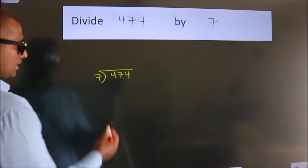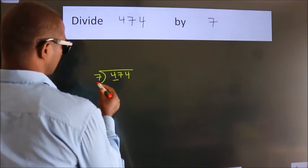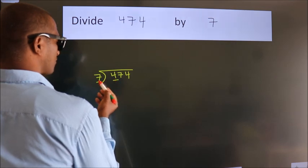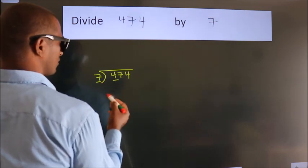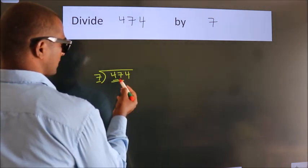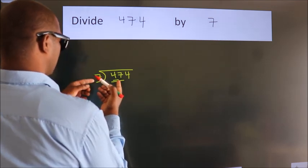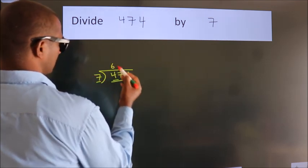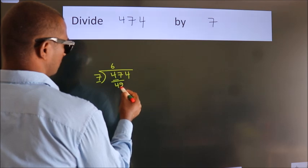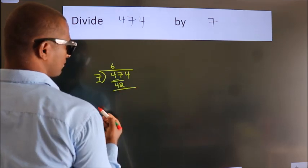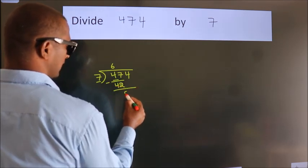Next, here we have 4, here 7. 4 is smaller than 7, so we should take 2 numbers: 47. A number close to 47 in the 7 table is 7 times 6, 42. Now we subtract and get 5.